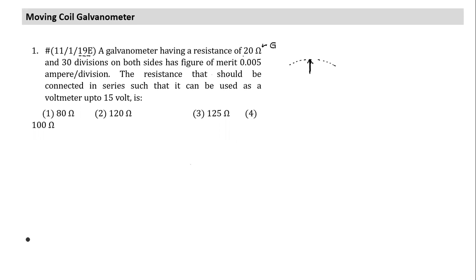A galvanometer with divisions on both sides is used in experiments where we don't worry about polarity. We used such galvanometers in Wheatstone bridge and potentiometer, where we need to find the balancing condition and the needle must swing in either direction depending on which side of the balance we are on.